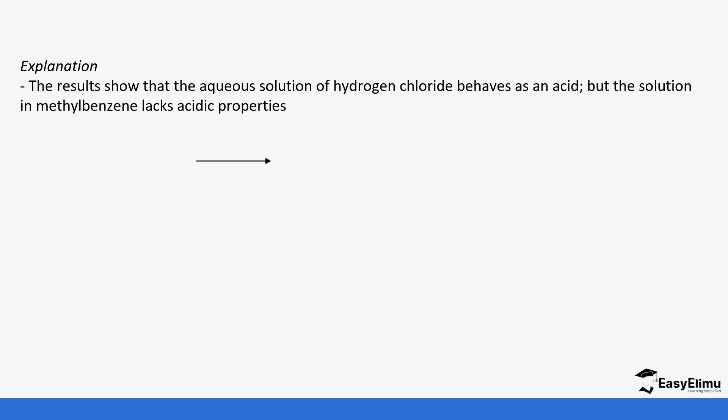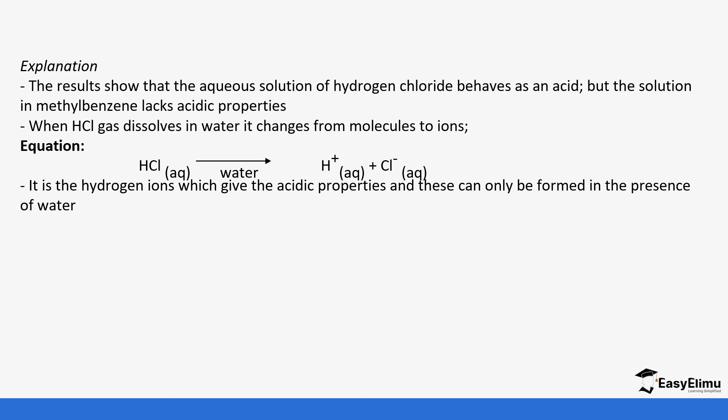What does this tell us about hydrochloric gas? The results show that the aqueous solution of hydrochloric behaves as an acid, but the solution in methylbenzene lacks those acidic properties. When hydrochloric acid dissolves in water, it dissociates into ions. Hydrochloric dissociates into hydrogen ions and chloride ions. The hydrogen ions give it its acidic property.